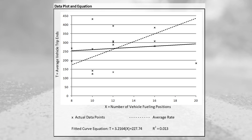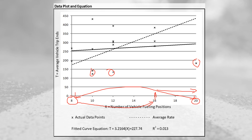Looking at the data plot, each X represents a data point and they range from a minimum of 8 to a maximum of 20 fueling positions. It's important to check whether your location falls within the bounds of the data used to develop this. There's only one point at 20 and nothing above 16, so anything above 16 may be somewhat questionable. Our value of 14 looks good — it's within the core range of 8 to 16.